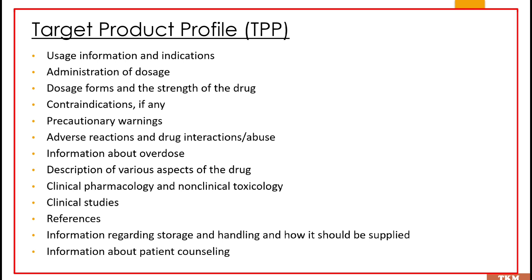The TPP constitutes the entire information about the drug, starting from usage information, indication, administration, dosage form, strength, content indication, precautionary warning, adverse reaction, overdose information, clinical and non-clinical pharmacology, clinical studies, references, storage, handling, and patient counseling.